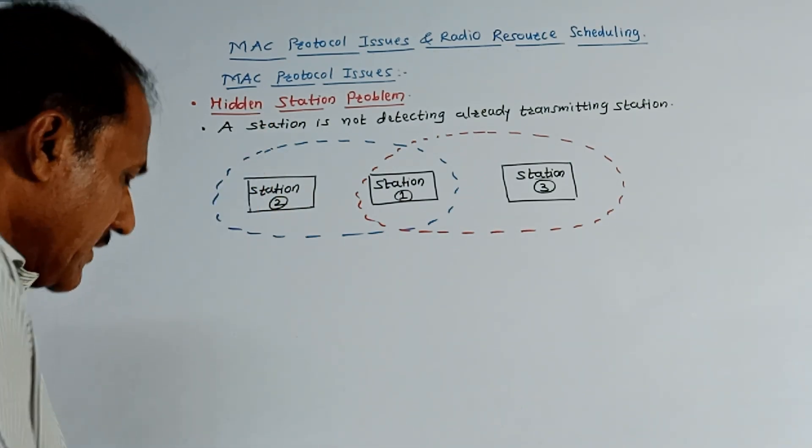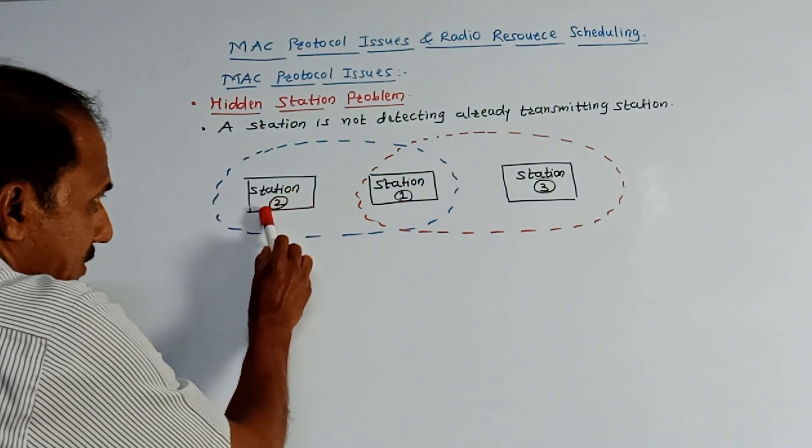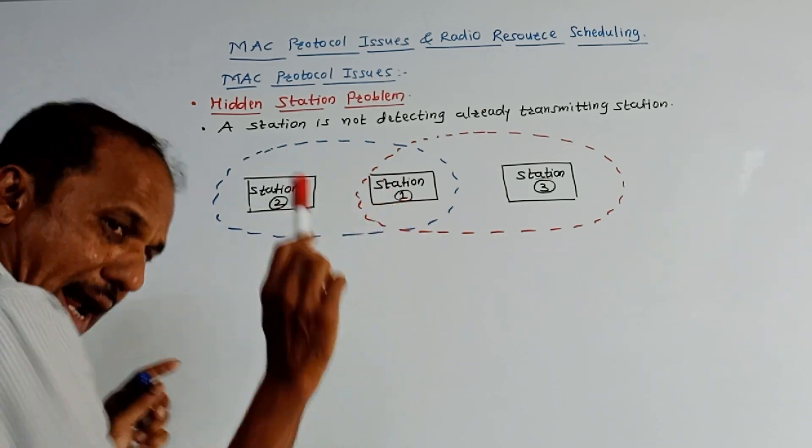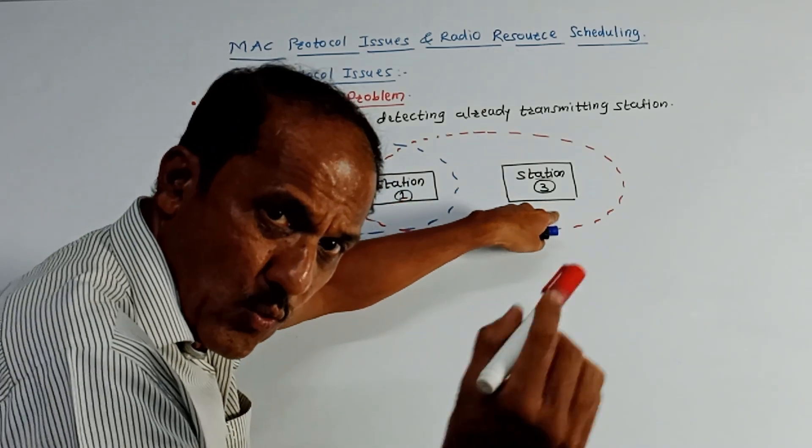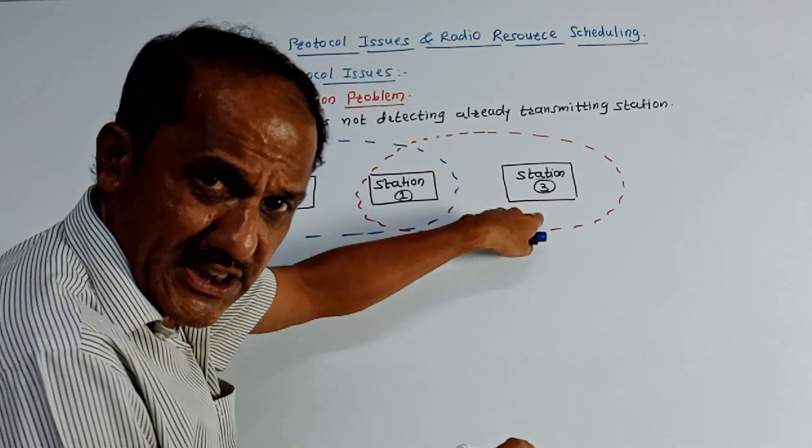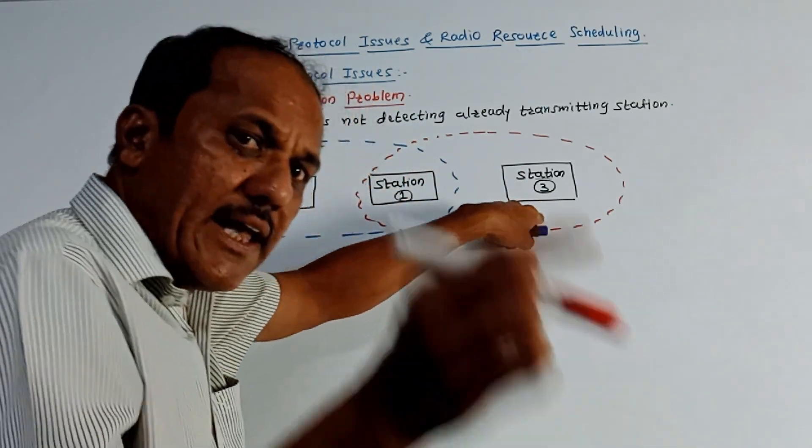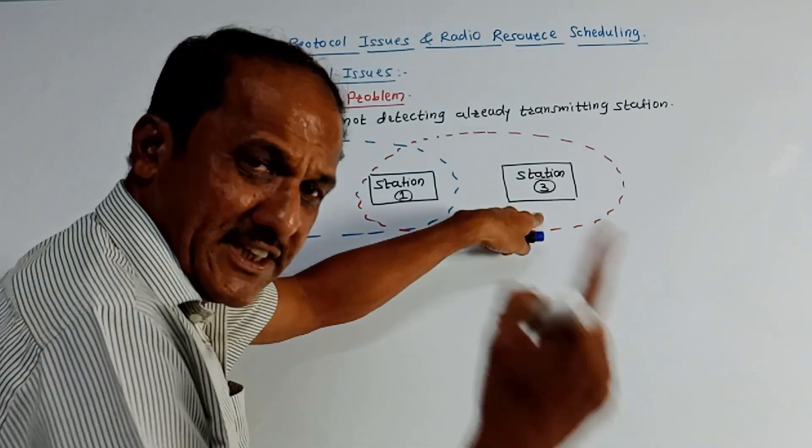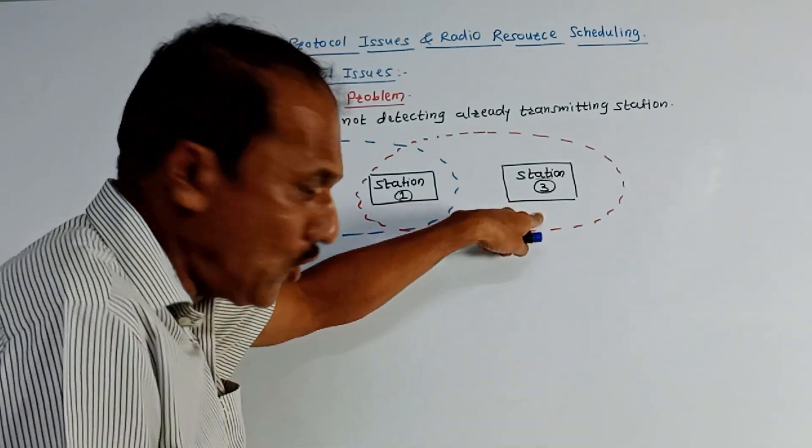Suppose the transmission is going on from station 2 to station 1, and station 3 wants to transmit the data to station 1. In that case, station 3 will check whether any other station is already transmitting the data or not.